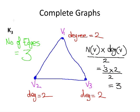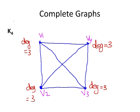Now we're going to do it for K4, and we're going to see if our rule works. So here we have K4, we have 4 vertices, each vertex has degree 3, and there are 6 edges.